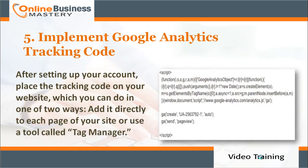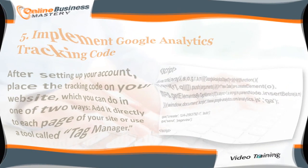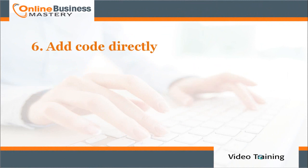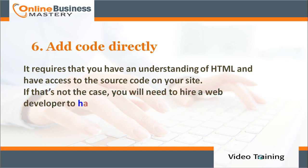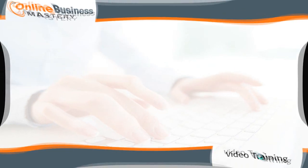You can implement the tracking code in one of two ways: add it directly to each page of your site, or use a tool called Tag Manager. Number six: add code directly. This requires that you have an understanding of HTML and have access to the source code on your site. If that's not the case, you will need to hire a web developer to handle the implementation.